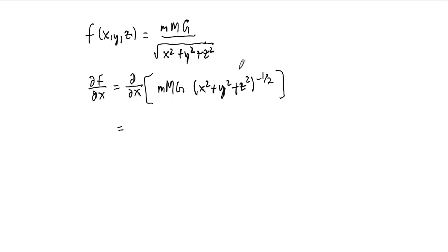Okay, and then when we take the derivative, this is just a chain rule, and the mMG is a constant, so this hangs around. The derivative of this portion, again by the chain rule, is negative one half, negative one half, times x squared plus y squared plus z squared to the negative three halves power. But then by the chain rule, since we're taking the x derivative, this is times 2x.